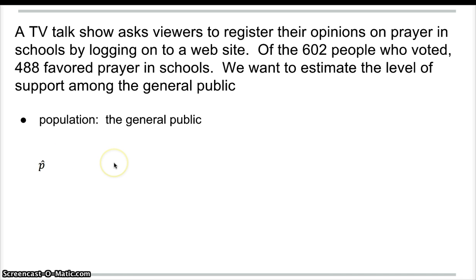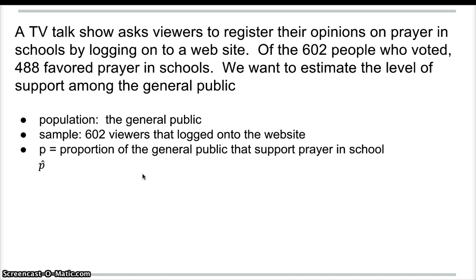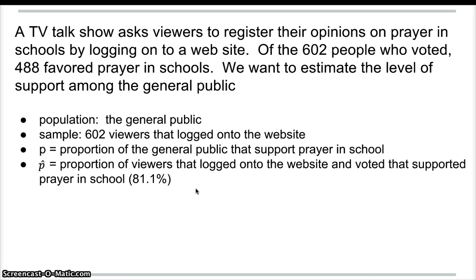So the population is the general public. The sample is the 602 viewers that actually logged onto the website. The P is the proportion of the general public that support prayer in school — not out of the 602 viewers, but out of the whole general public. The P-hat is the proportion of viewers that logged onto the website and voted that supported prayer in school, which was 81.1%, found by doing 488 divided by 602.